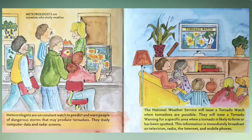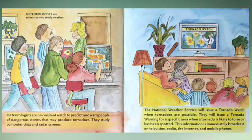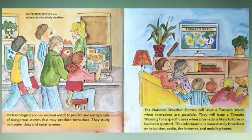Meteorologists are on constant watch to predict and warn people of dangerous storms that may produce tornadoes. They study computer data and radar screens. The National Weather Service will issue a tornado watch when tornadoes are possible. They will issue a tornado warning for a specific area when a tornado is likely to form or has been spotted. This information is immediately broadcast on television, radio, the internet, and mobile phones.